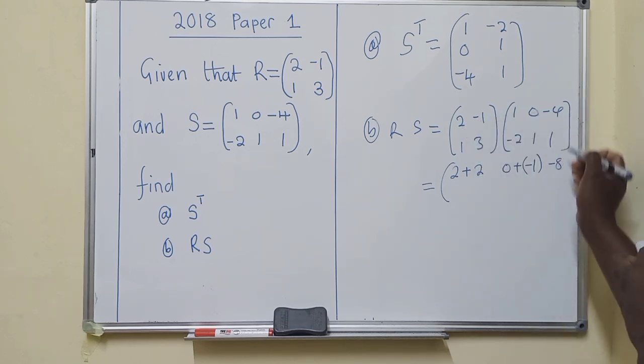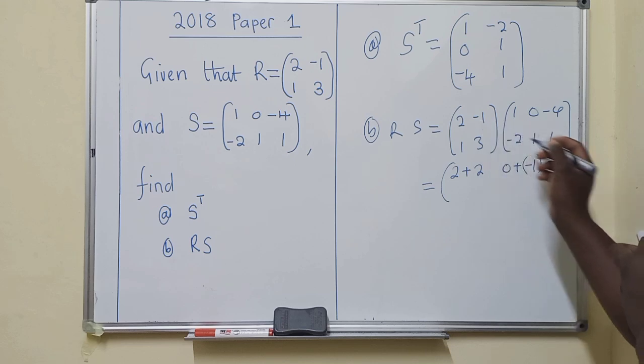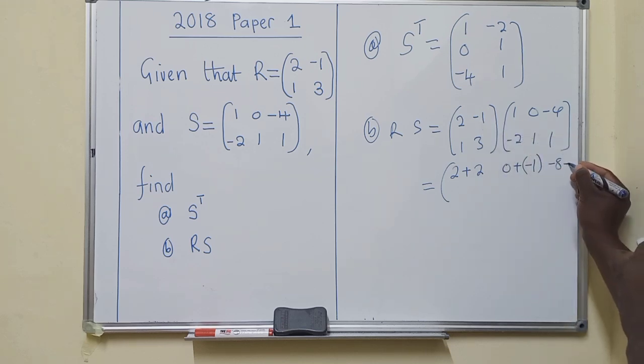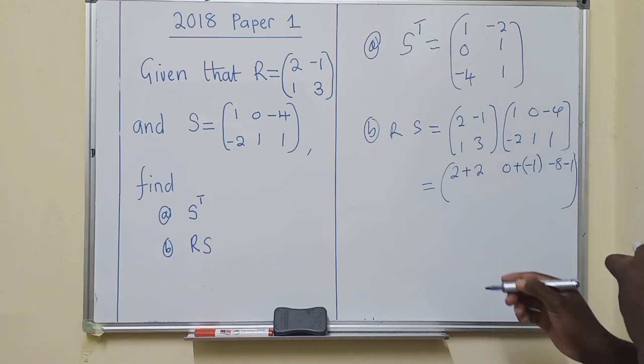Because 2 by negative, negative 4 is negative 8. Negative 1 by 1 is a negative 1 there, so when we just say plus 1, it will be minus 1 there.